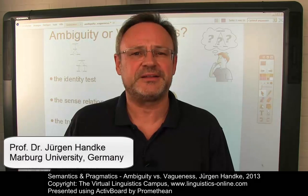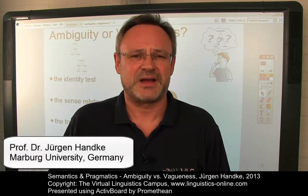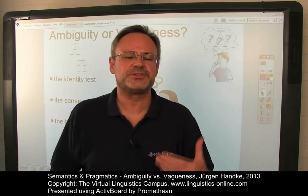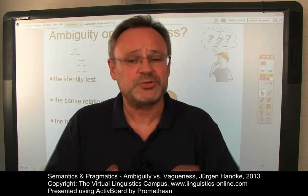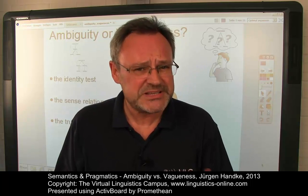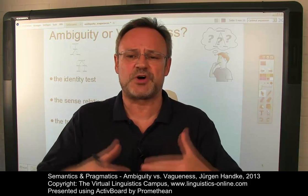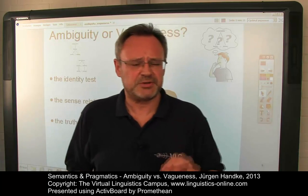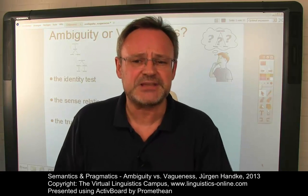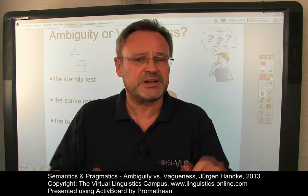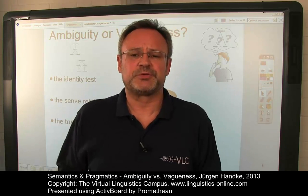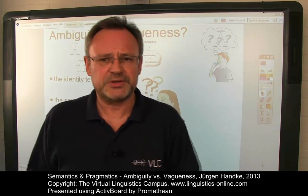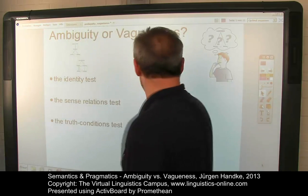Hello, this is the final e-lecture of our ambiguity and vagueness trilogy. The central question we are going to discuss here is how to decide whether a certain case of multiplicity of readings is an instance of ambiguity or one of vagueness. To do this, several tests have been developed to distinguish the clear cases of ambiguity from the clear cases of vagueness and to provide a basis for deciding on the problematic examples.